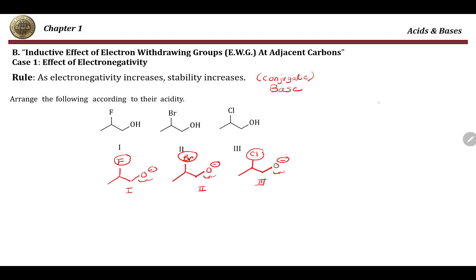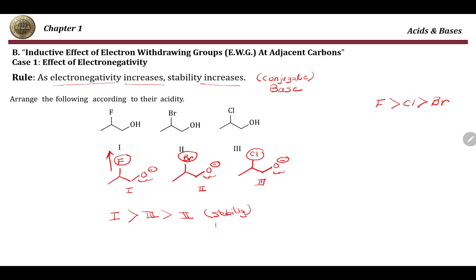Fluorine is the most electronegative element, followed by chlorine, then bromine. This means that in the case of fluorine we will have the highest electron-withdrawing effect, whereas for bromine and chlorine it will be less. According to the rule that as electronegativity increases, stability increases, compound one will be the most stable, followed by three, then two. The stability order and acidity order are the same, so this is the acidity order for these compounds.